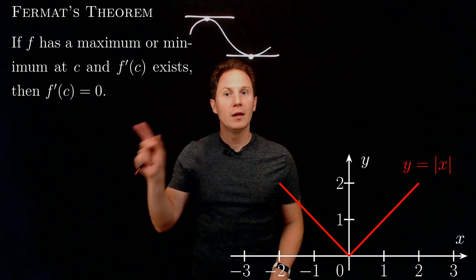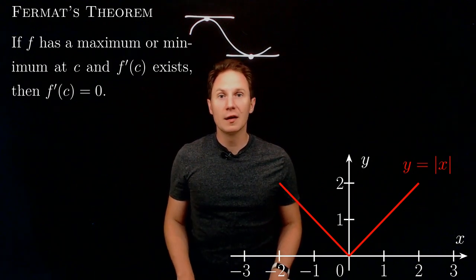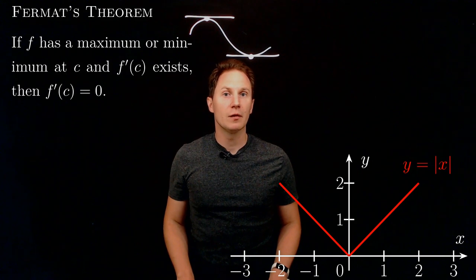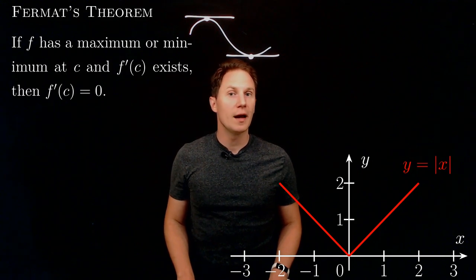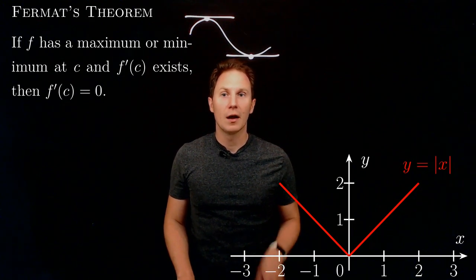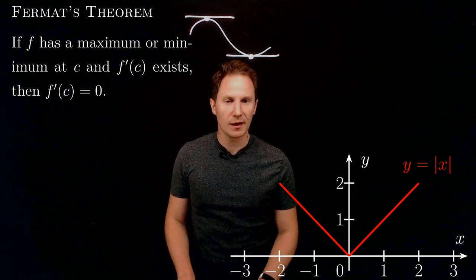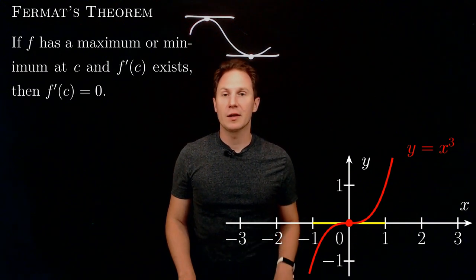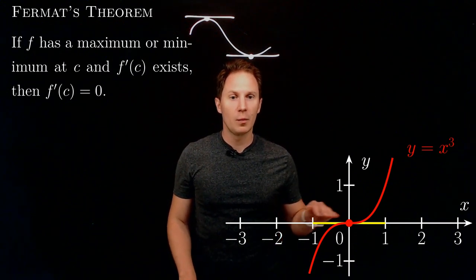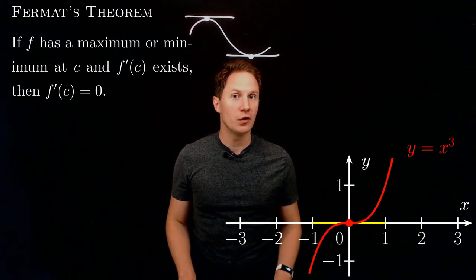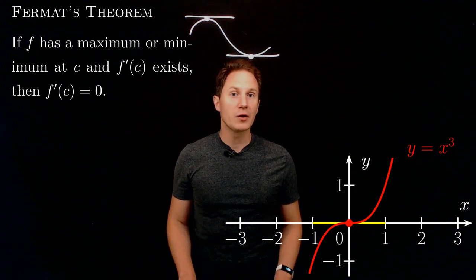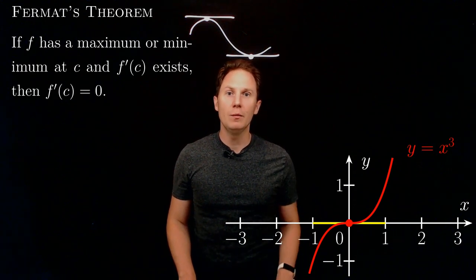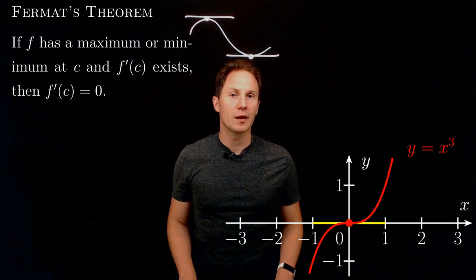Nor can we reverse Fermat's theorem to declare that if the derivative at c is zero, then the function f must have a maximum or a minimum at c. An example showing this is not the case is f(x) = x³ at x equals zero: the derivative at that point is zero, the slope of the tangent line is zero, yet the function has neither a minimum nor a maximum at that point.